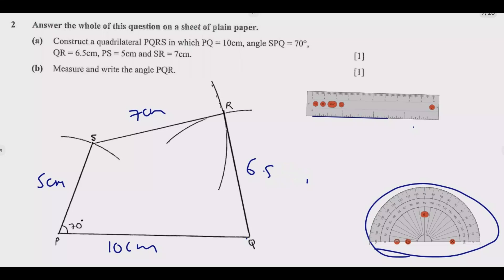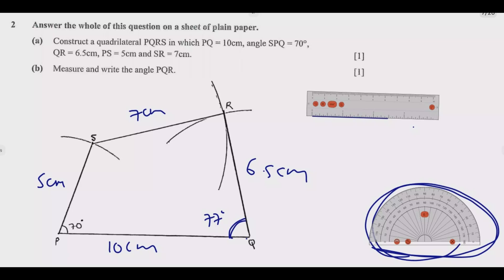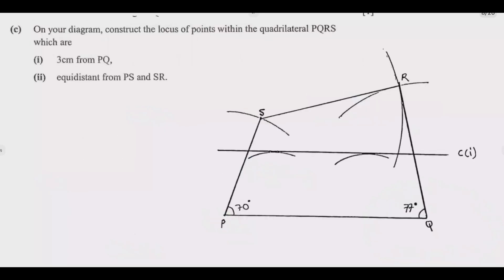Once the quadrilateral is drawn, you should be able to get those two marks. Question B says: measure and write angle PQR. Use your protractor and come to measure this angle. Angle PQR should be approximately 77 degrees — that should be the degree of the angle. Then you are good to go.